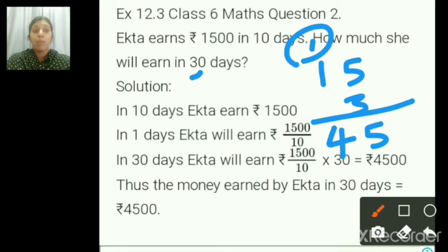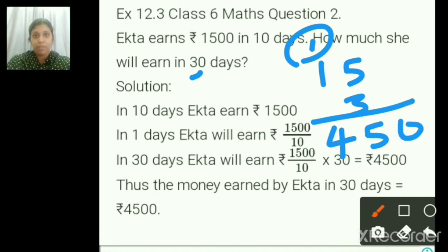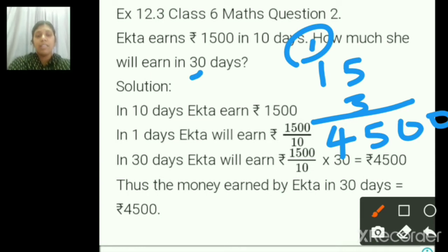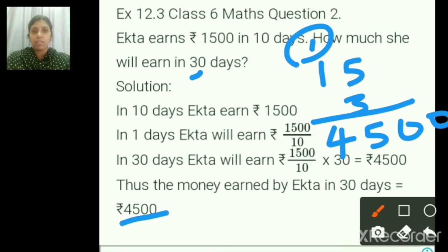Now 150 you know, so you have 1 zero — add that zero. And 30 also you are having 1 more zero — add that zero. So the money earned in 30 days is equal to 4500.